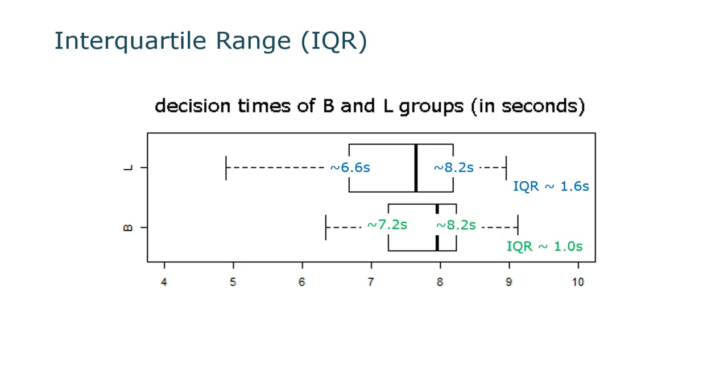The next box is much smaller. Its interquartile range is 1 second. So it's like two-thirds as large as the other one. So this can help us see that the second box had much less variability than the first box. And the IQR tells us exactly how much less. Well, it has 0.6 seconds less variability.